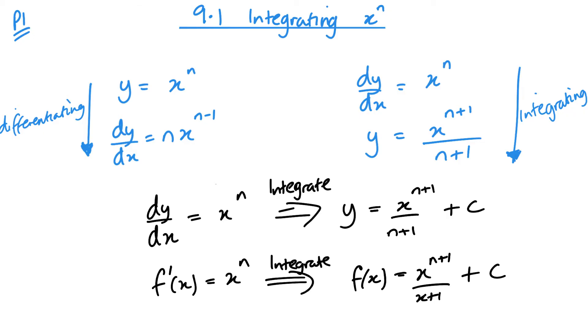Okay, now, it's worth noting that n cannot equal minus 1. This wouldn't work for that, as you couldn't divide by 0. Let's have a look at a couple of examples.